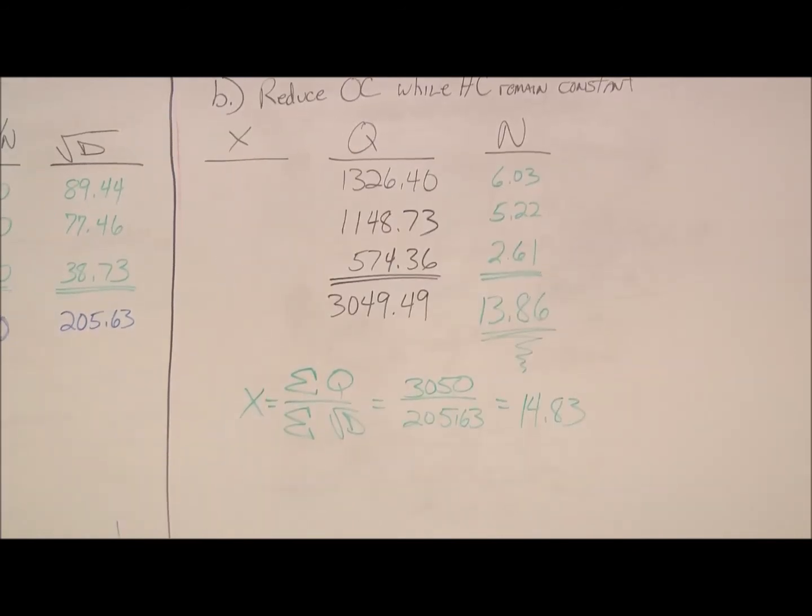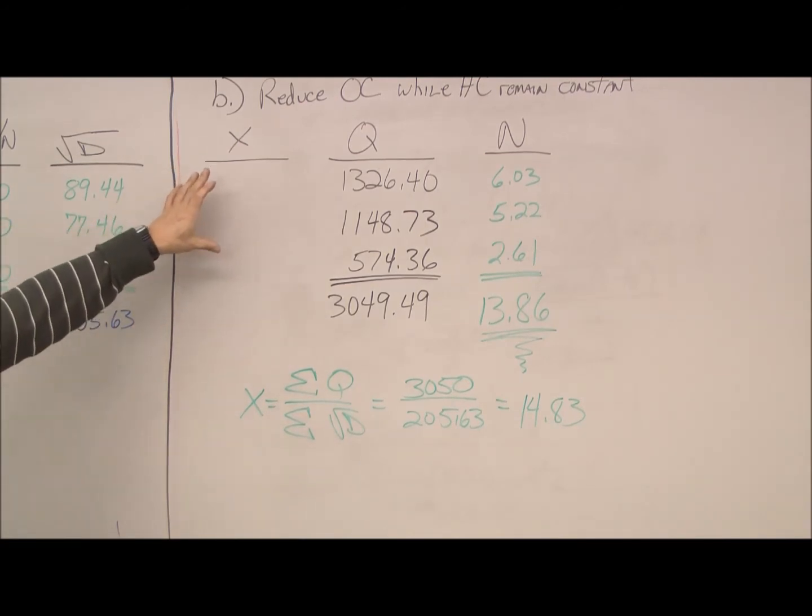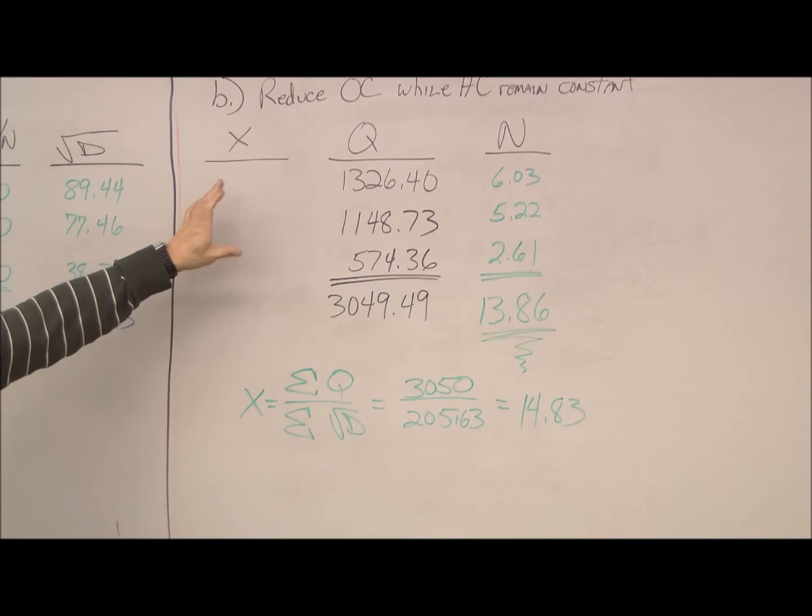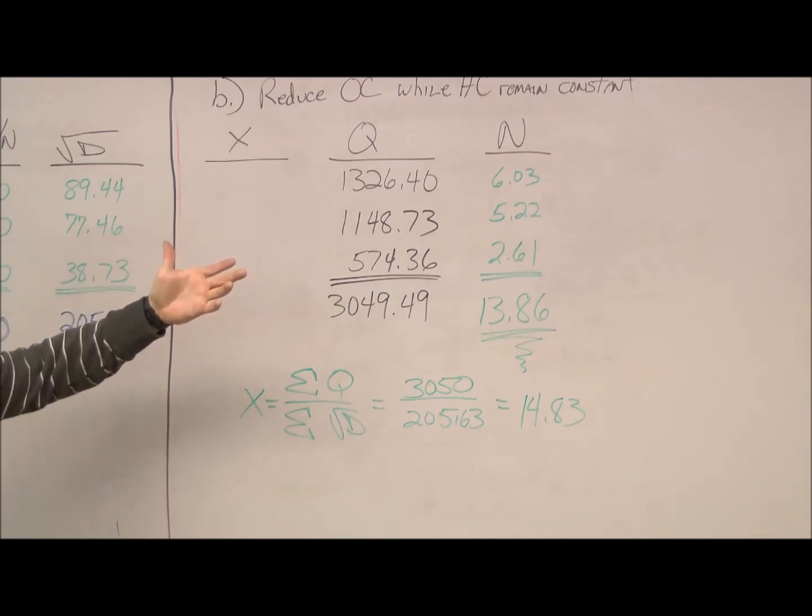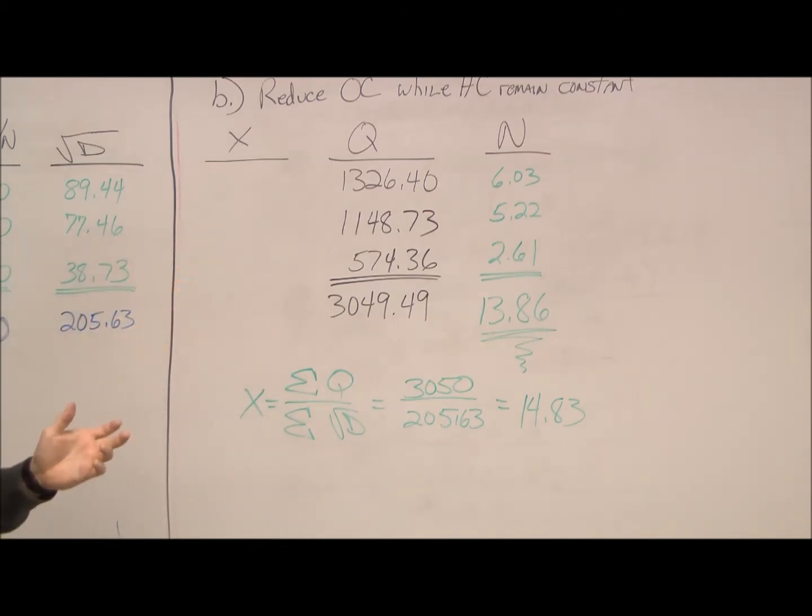Alright, and finally, we're going to look at what happens when we reduce ordering costs while holding costs remain constant. Again, this will save the company money if you look at total ordering costs. It's the number of orders times the per order charge.